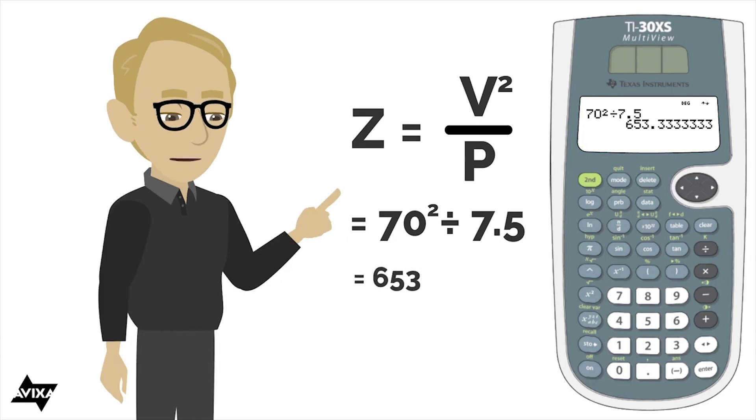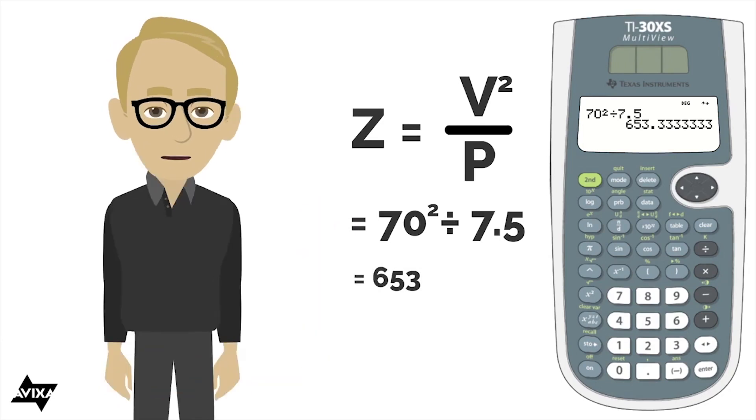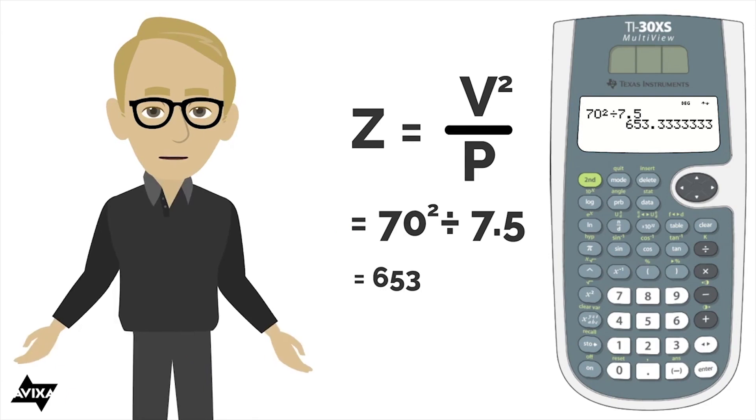And that gets us about 653 ohms worth of impedance. Again, this is going to get us in the ballpark. It's not going to be exact. But now I can actually measure the loudspeaker with an impedance meter and see if it's close to verify what I've predicted. Thank you, Cartoon Tom.